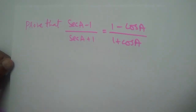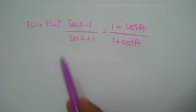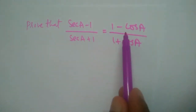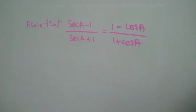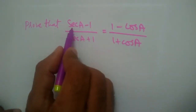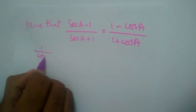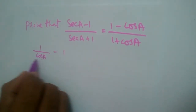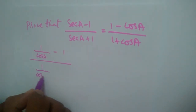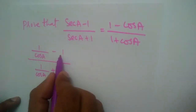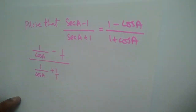Let us prove that (sec a - 1) divided by (sec a + 1) is equal to (1 - cos a) divided by (1 + cos a). Now, we can write sec a as 1/cos a. So the expression becomes (1/cos a - 1) divided by (1/cos a + 1).